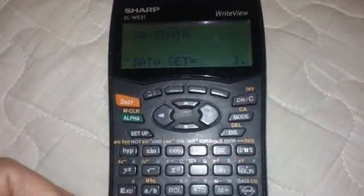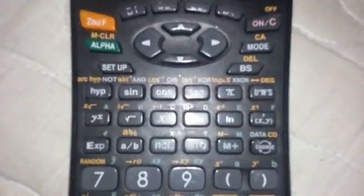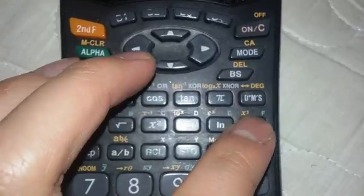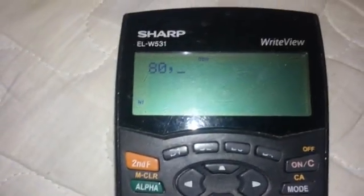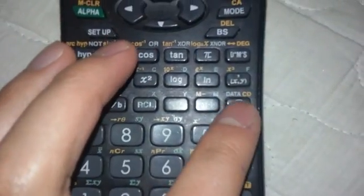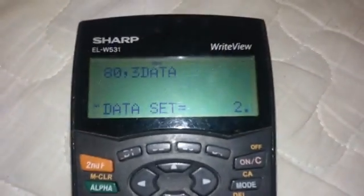Let's say another number - the number 80 occurs how many times? Let's say the number 80 occurs three times. Back down to data and boom, data set two. Now you have your data already.